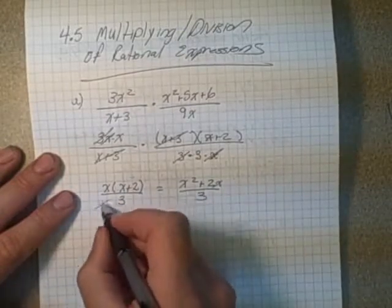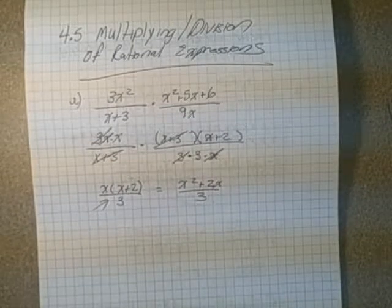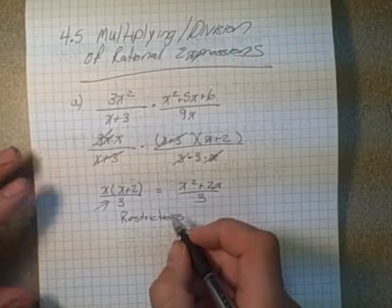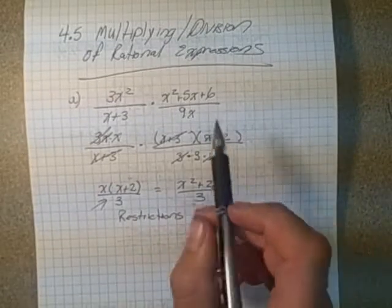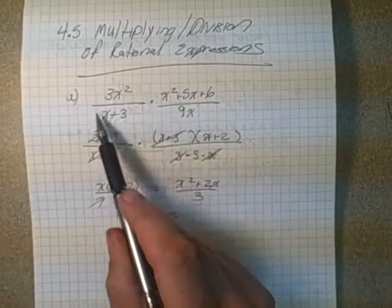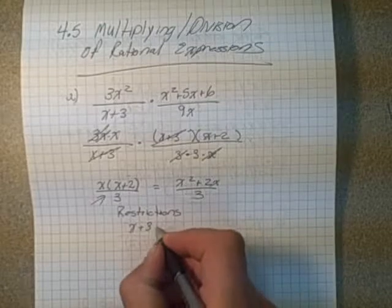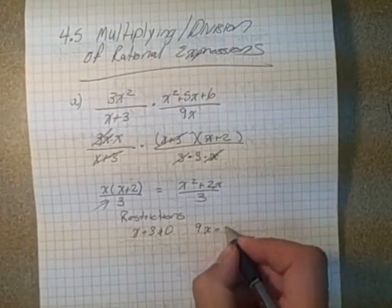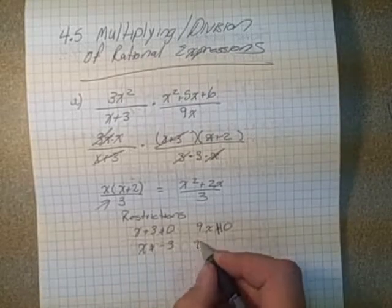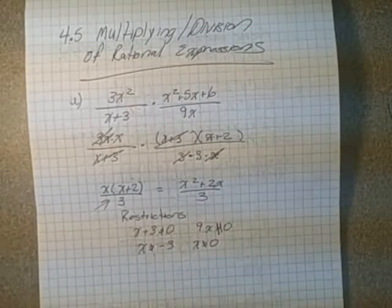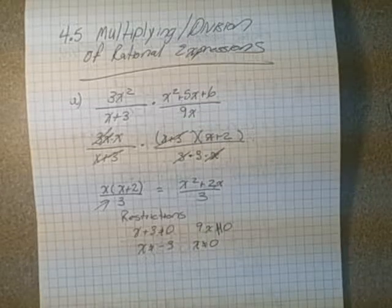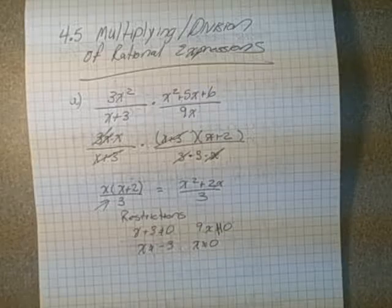Simplifying further gives x squared plus 2x over 3, though you can also leave it in factored form. Now we look at restrictions: going back to the beginning, we don't want any denominator to equal zero. So x plus 3 cannot equal 0 and 9x cannot equal 0, giving restrictions x cannot equal negative 3 and x cannot equal 0. For multiplication, you simply look at the factored denominators and find where they equal zero.